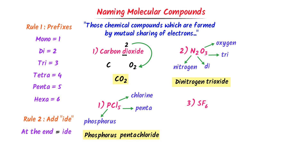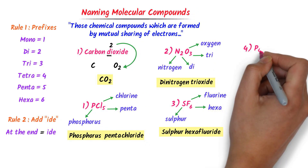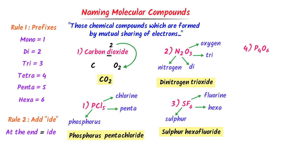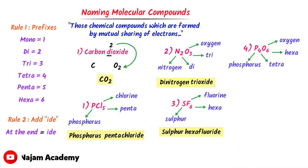For SF₆: there is 1 atom of sulphur, and the second element is fluorine with 6 atoms — we write hexa — giving sulphur hexafluoride. For P₄O₆: there are 4 atoms of phosphorus, so we write tetra, and the second element is oxygen with 6 atoms — we write hexa — giving tetraphosphorus hexoxide.